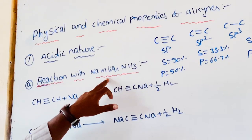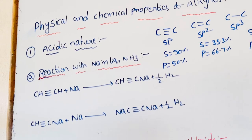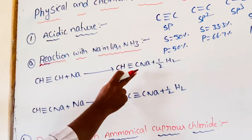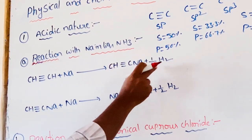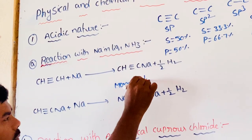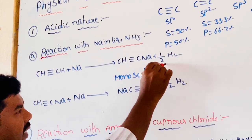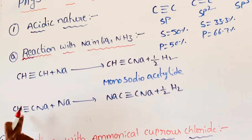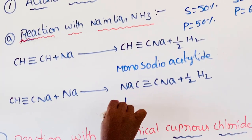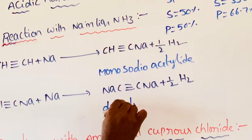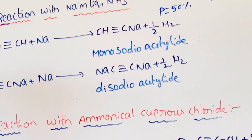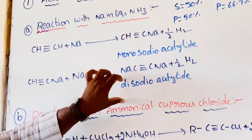Next, reaction with liquid ammonia and sodium. Alkynes react with sodium metal to give mono-sodio acetylide and dihydrogen. This mono-sodio acetylide further reacts with sodium metal to give di-sodio acetylide. This method is used in the preparation of higher members of alkynes.